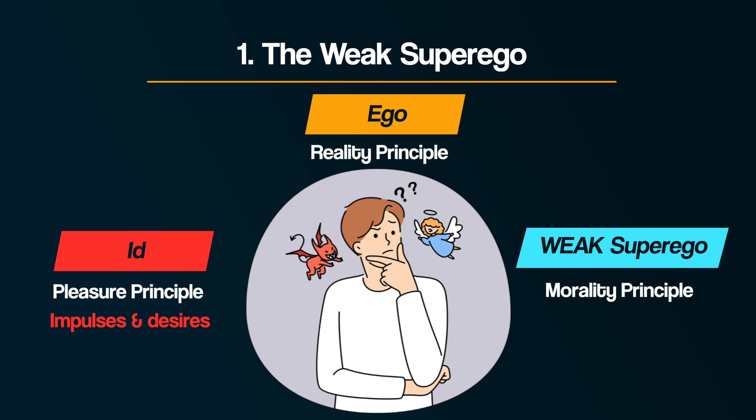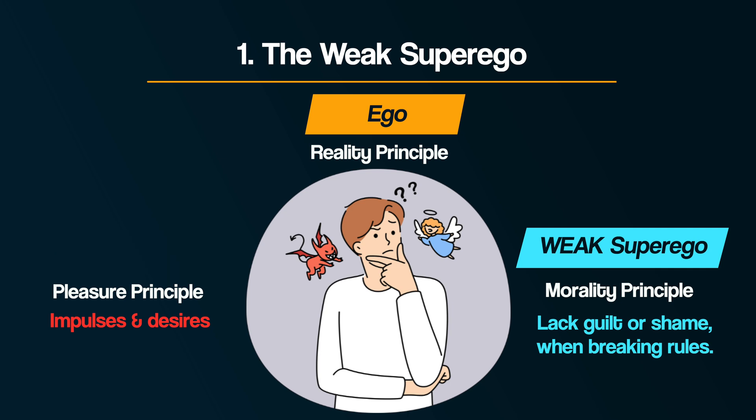Without a fully formed superego, the individual may lack sufficient guilt, shame, or anxiety when they consider breaking rules or committing antisocial acts. As a result of this weak superego, their behaviour may be guided primarily by the desires of the id — the impulsive, pleasure-seeking urges — with little restraint from an internalised moral code.